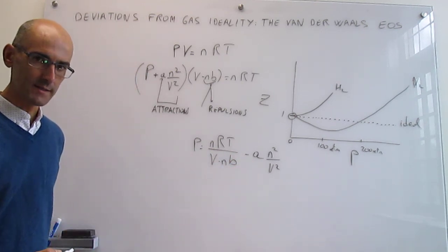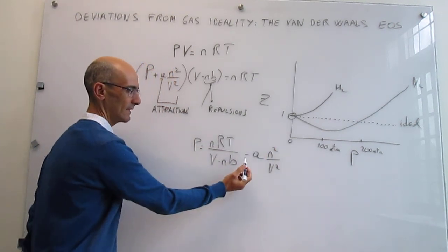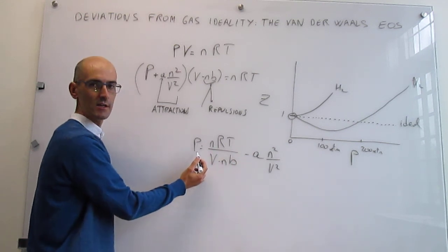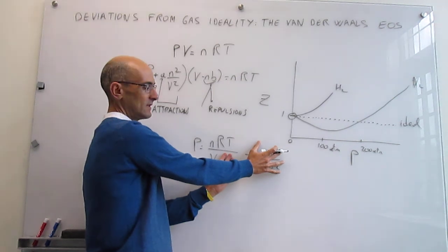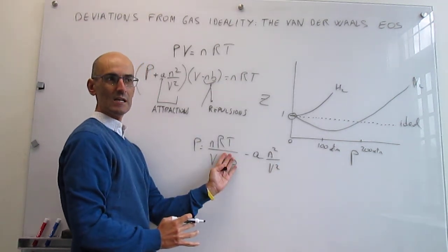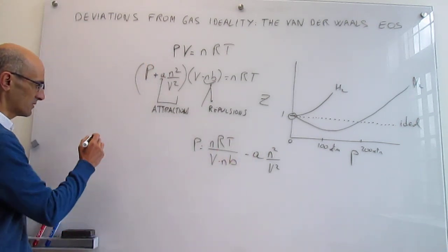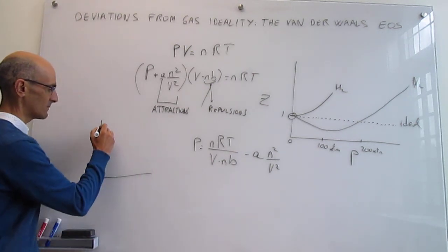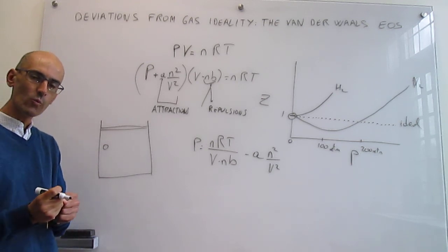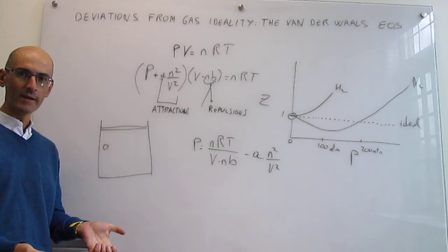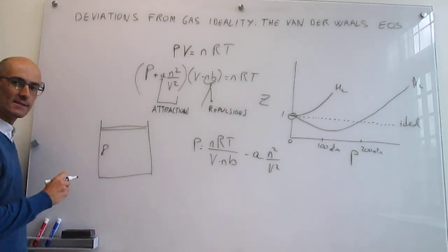This attraction term is large when attractions are significant, causing the pressure to be less than the ideal pressure. If you remove both correction terms, you get the ideal gas equation of state. But if you make the attraction term sizable, you get a lower pressure than you would otherwise. To understand why this corresponds to attractions, think of a gas in a container where pressure arises from gas particles colliding with the walls of the container — that's what gives rise to pressure.